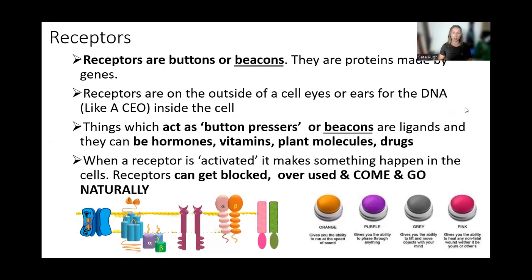Receptors are sort of like buttons, but they can also be beacons. Moving into how light can affect receptors: receptors are proteins made by genes or DNA in the nucleus of the cell. If we think of the receptor as the eyes and ears for the inside of the cell, then the DNA is a bit like a CEO in an office.